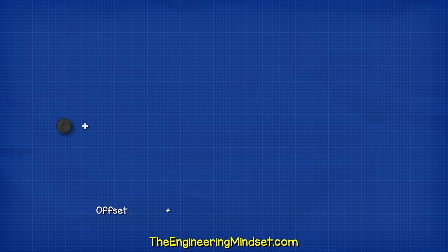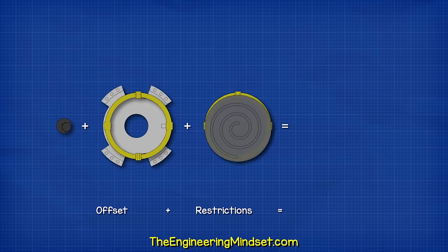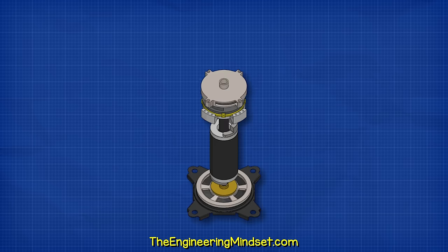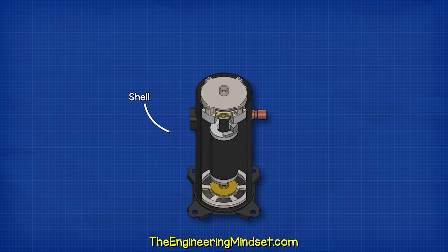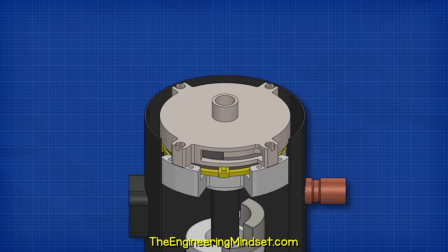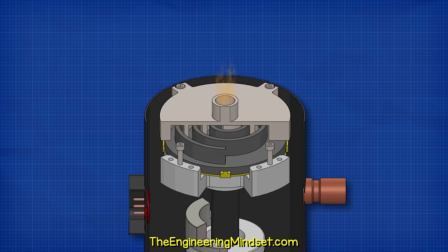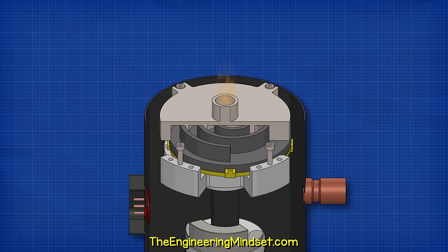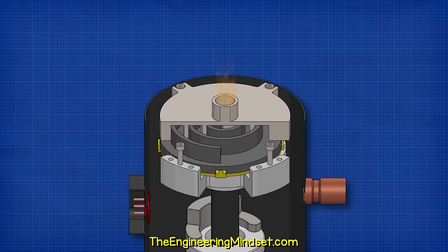The offset of the shaft, combined with the restrictions of the Oldham ring, allows the scroll to orbit without rotating on its axis. The orbiting scroll will sit within a fixed scroll. This is connected to the shell and also the housing, and so this is locked in position. When the shaft rotates, the orbiting scroll will now move within the fixed scroll. This causes compression.